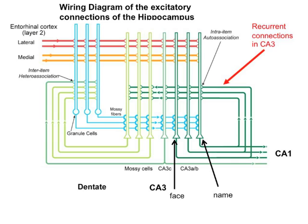Now that those synapses are strengthened, what good are they? It turns out that there's a fantastically important process called pattern completion. For instance, if somebody shows you the face and the name cells are not active, the fact that the synapses between the face and name cells have been strengthened will now cause the name cells to become active. That is the amazingly important function of the recurrent connections — they use associative memory to perform the process of pattern completion.